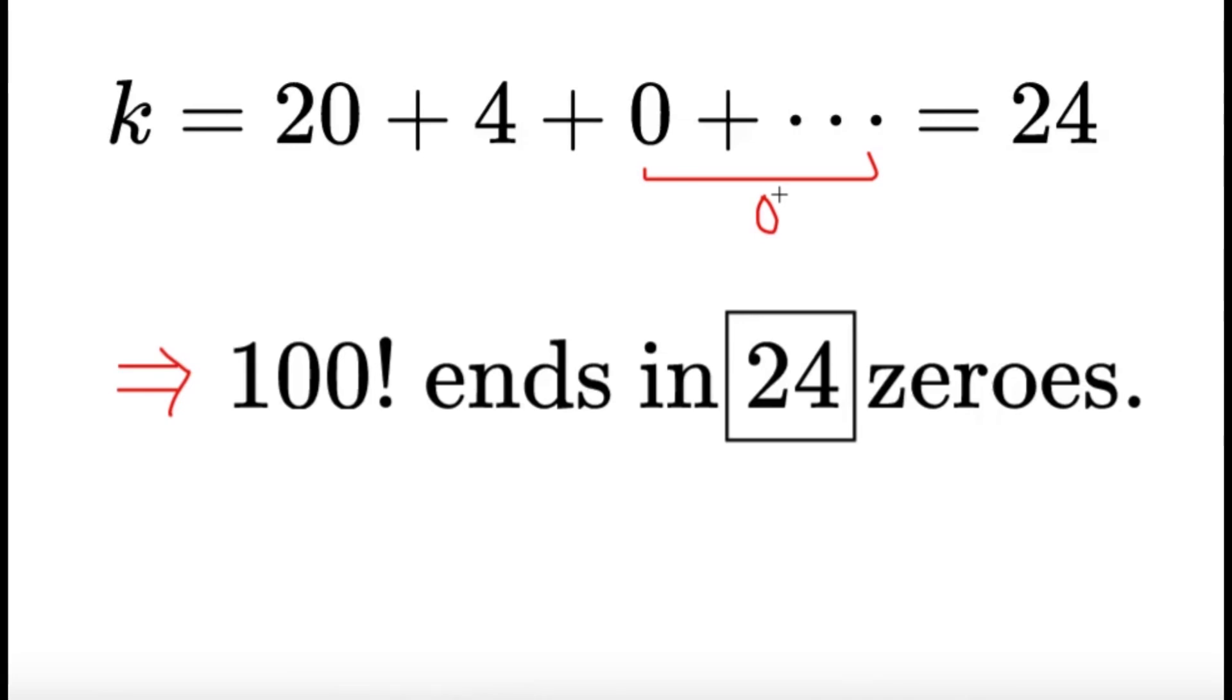And since 5 raised to 24 is the largest power of 5 that divides 100 factorial, from our observations earlier, 100 factorial will end in 24 zeros. So, it has 24 trailing zeros. And this will be our final answer.